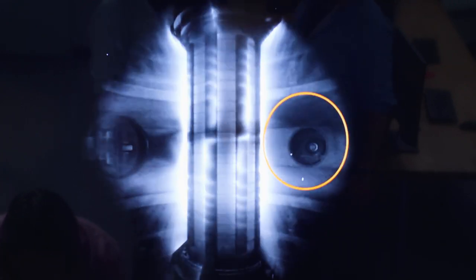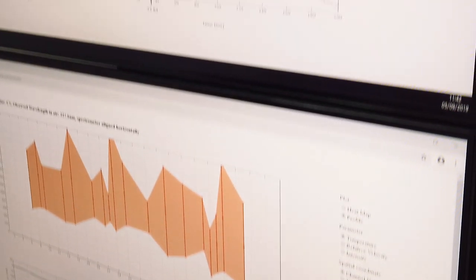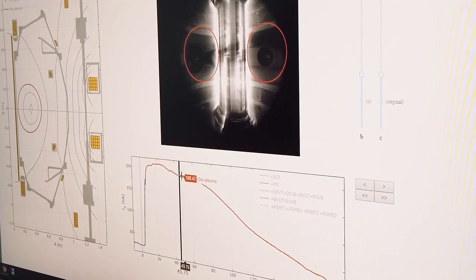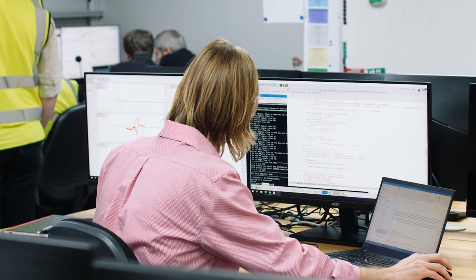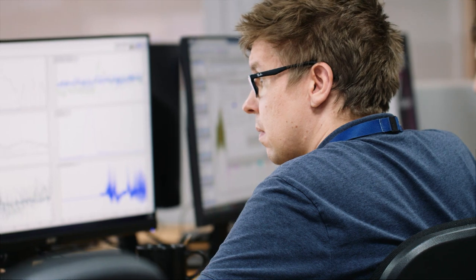What we're going to start with is magnetic control. We'll take in magnetic measurements, reconstruct the plasma, figure out its shape and position and plasma current, and then control that during the pulse to follow the predefined waveforms that the operator has requested.